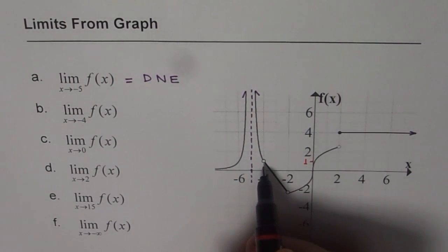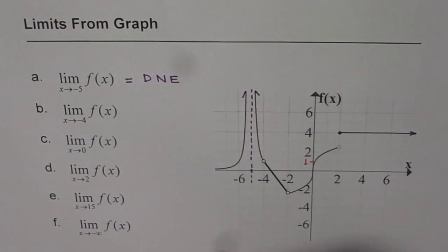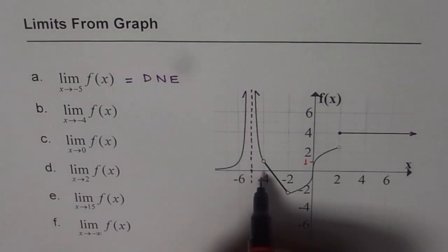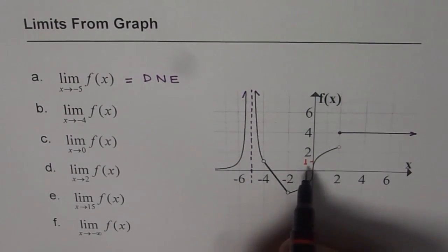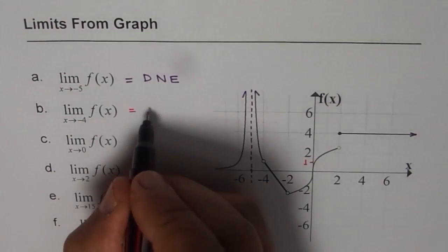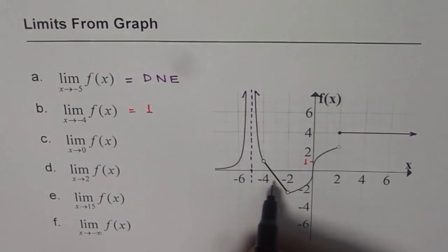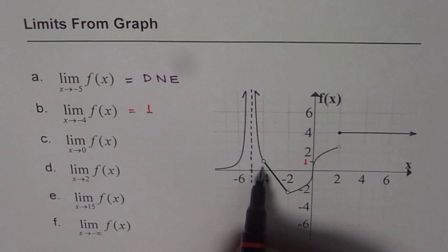Remember, there's a hole. The function is not defined at minus 4. But limit is all about approaching a point, not just being there. So the limit here is 1, since from both sides we approach a value 1.